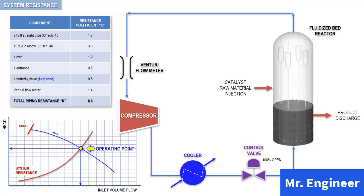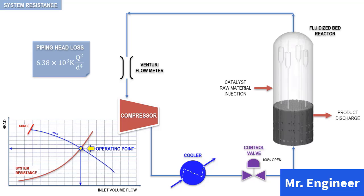This coefficient will be used in the head loss formula, as seen here. In this formula, K is the resistance coefficient, which is dependent on the control valve opening. It increases with reduced valve opening, resulting in increased head loss and system resistance.